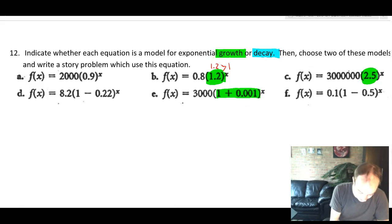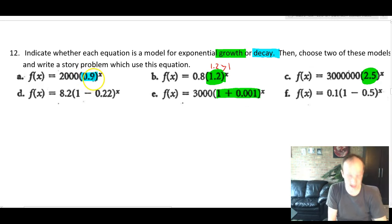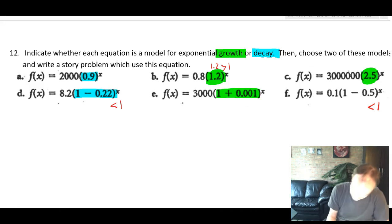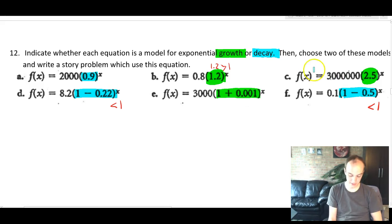All of these other things, though, are going to generate decay. This is less than 1. This is less than 1. And this value here is also less than 1. So those will be decay. So again, here, green growth, blue decay.